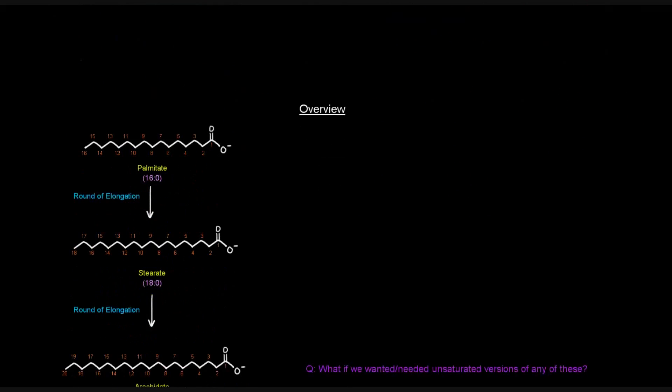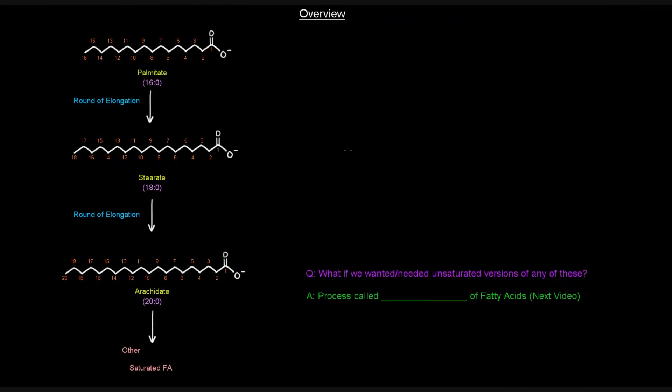So if we think about the overview of what's going on here, we can take palmitate and have a round of elongation occur to go from a 16 carbon saturated fatty acid to stearate, which is an 18 carbon saturated fatty acid. We just added two carbons. If we have another round of elongation, we can go from an 18 carbon saturated fatty acid to a 20 carbon saturated fatty acid in arachidate. And again, these numbers are labeling the carbons. And this can continue. We can have more rounds of elongation to give us other long chain saturated fatty acids.